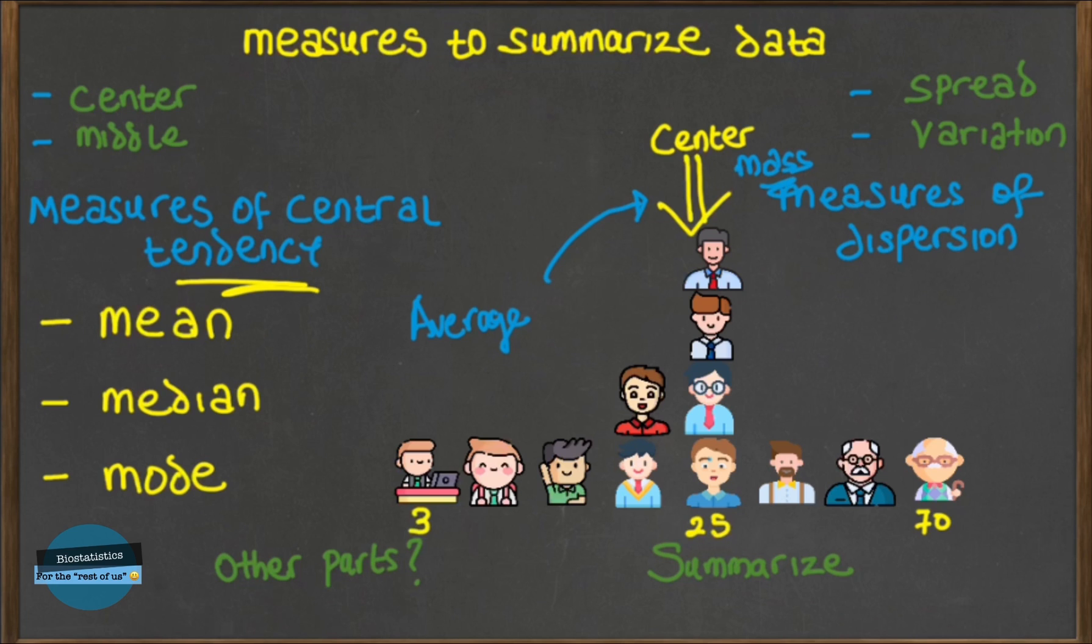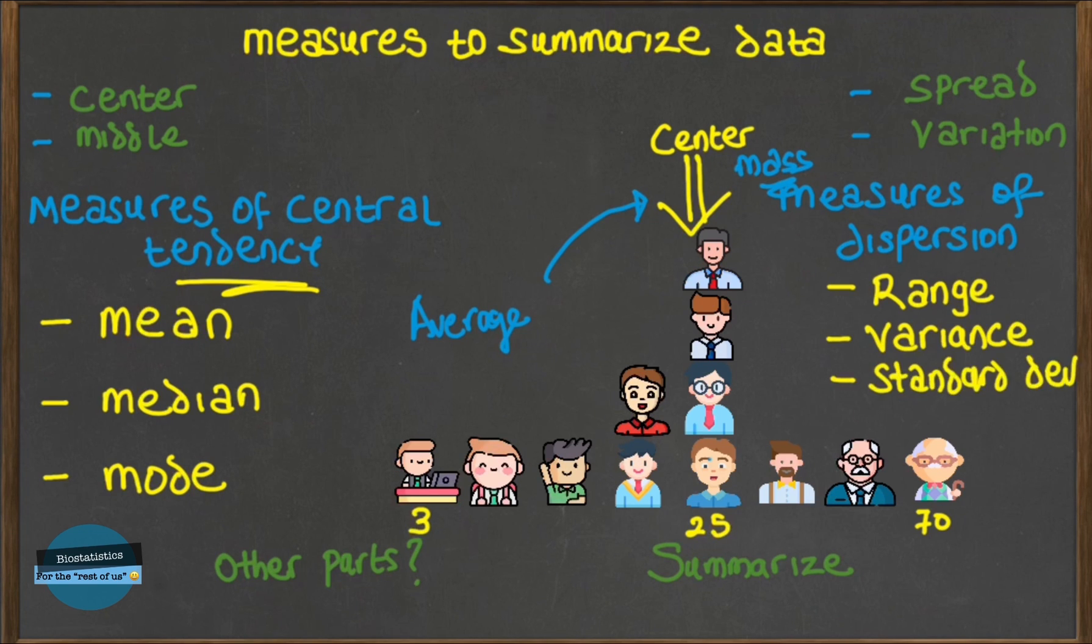Or measures of scatter, or more precisely, measures of spread. Now some commonly used measures of dispersion are the range, the interquartile range, the variance, the standard deviation, and the coefficient of variation.